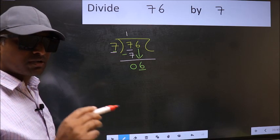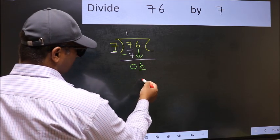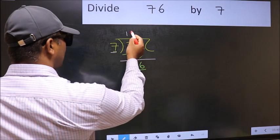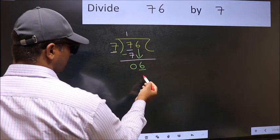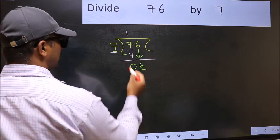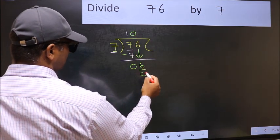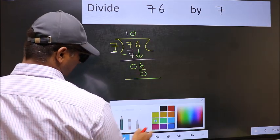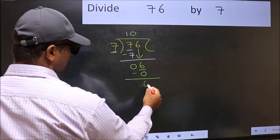Instead, what you should think of doing is, what number should we write here? If I take 1, we will get 7. But 7 is larger than 6. So what we should do is, we should take 0. So 7 into 0, 0. Now you should subtract. 6 minus 0, 6.